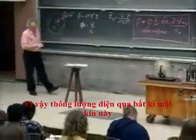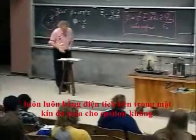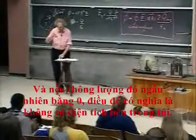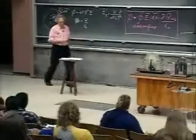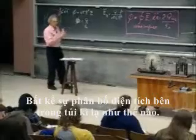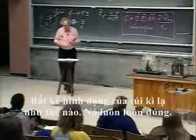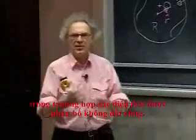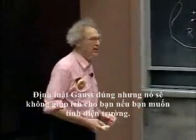The electric flux through any closed surface is always Q_inside divided by ε₀. And if that flux happens to be zero, it means there is no net charge inside the bag — there could be positive and negative charges, but the net is zero. Gauss's law always holds, no matter how weird the charge distribution inside, no matter how weird the shape of the bag. But Gauss's law won't help you very much if the charges are not distributed in a very symmetric way — it holds, but it doesn't help you calculate the electric field.